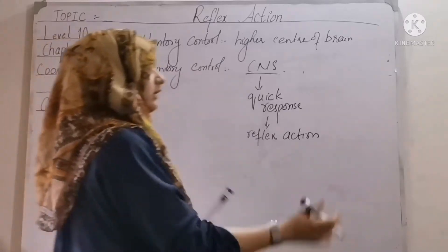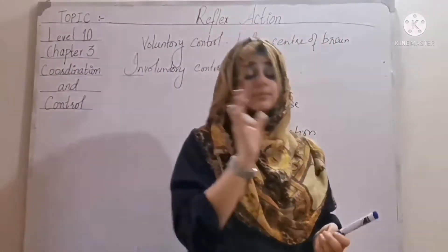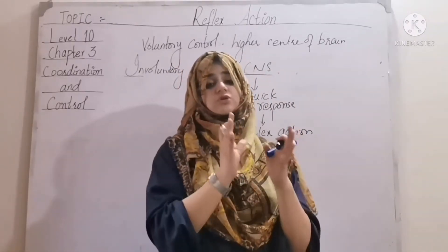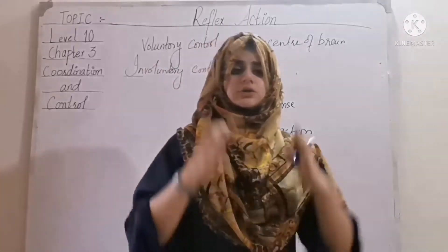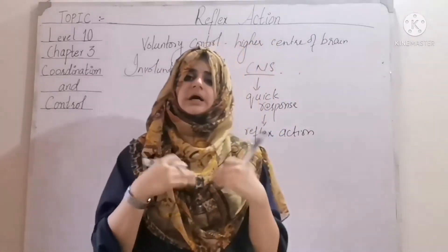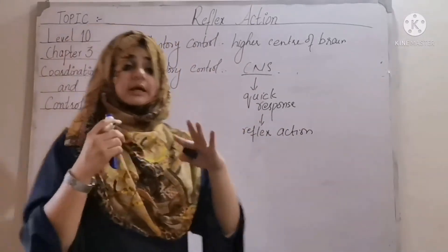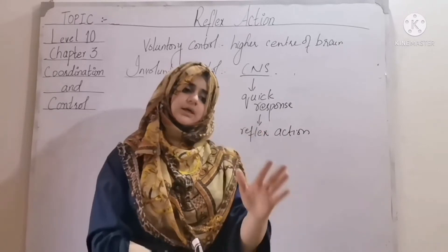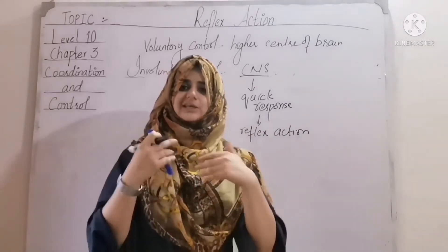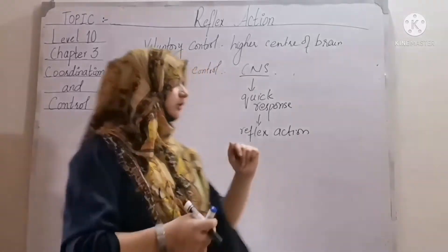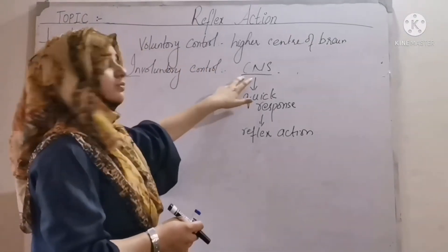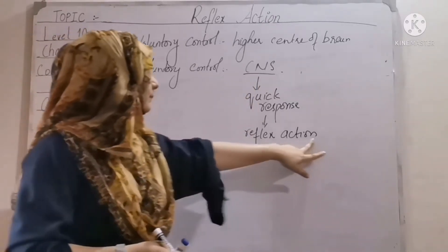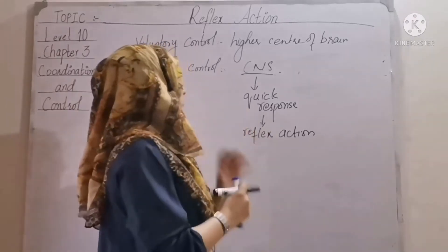Involuntary control — for example, my heartbeat, as I told you in the last video, becomes hard when looking at something very dangerous or horrible. My pupils dilate, my heartbeat is hard. It needs a quick response. It doesn't mean that I think about what I am seeing — there is no time for that. In an emergency situation you need a quick response. That is all brought about by the central nervous system, and that quick response is what we call reflex action.